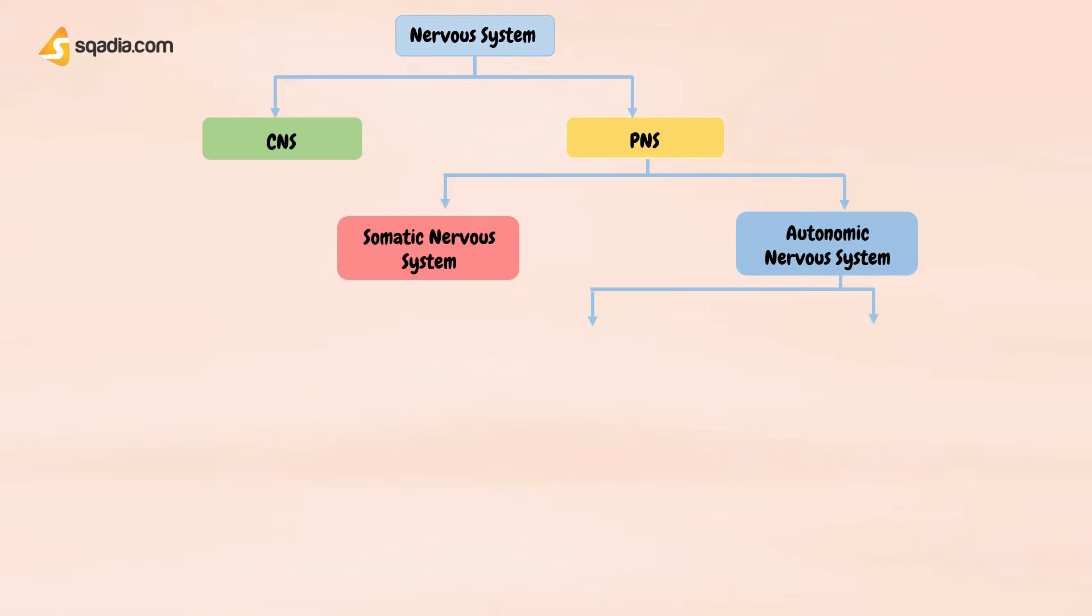The autonomic nervous system includes fibers connecting the central nervous system to the visceral organs such as the heart, stomach, intestines, and glands.